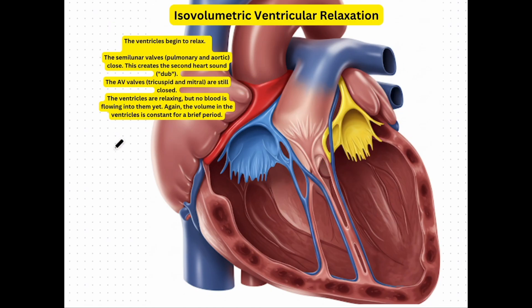Now we enter the fourth stage of the cardiac cycle: isovolumetric ventricular relaxation. The ventricles begin to relax, and the pulmonary and aortic valves are shut — that's what you hear in the dub. So you hear the lub, which is the mitral and tricuspid valves shutting, and then the dub, which is the pulmonary and aortic valves shutting. All valves are shut, so no blood flows into the ventricles and the volume remains constant — hence the name isovolumetric ventricular relaxation.